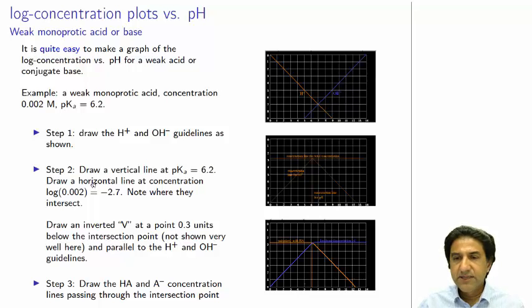Step 2 is we draw a vertical line at the pKa, 6.2 in this case, in this example. So here's 6.2. We draw this vertical orange line here as another guideline. And we draw a horizontal line at the log of the concentration of the monoprotic acid that we're interested in. In this case, the concentration is 2 times 10 to the minus 3, so the log of that is nearly negative 3. It's actually a bit larger than that, negative 2.7. And so we draw a line here at negative 2.7 across, and that represents the concentration line for the species, the total concentration of the acid, the weak acid in the solution.